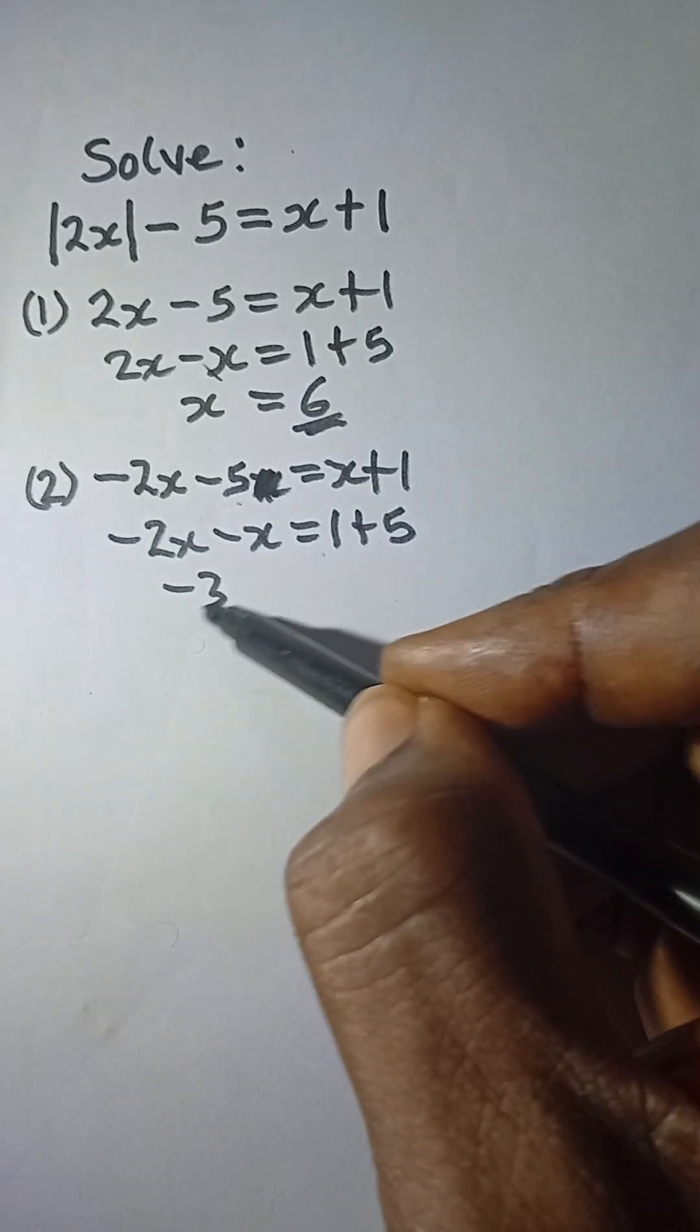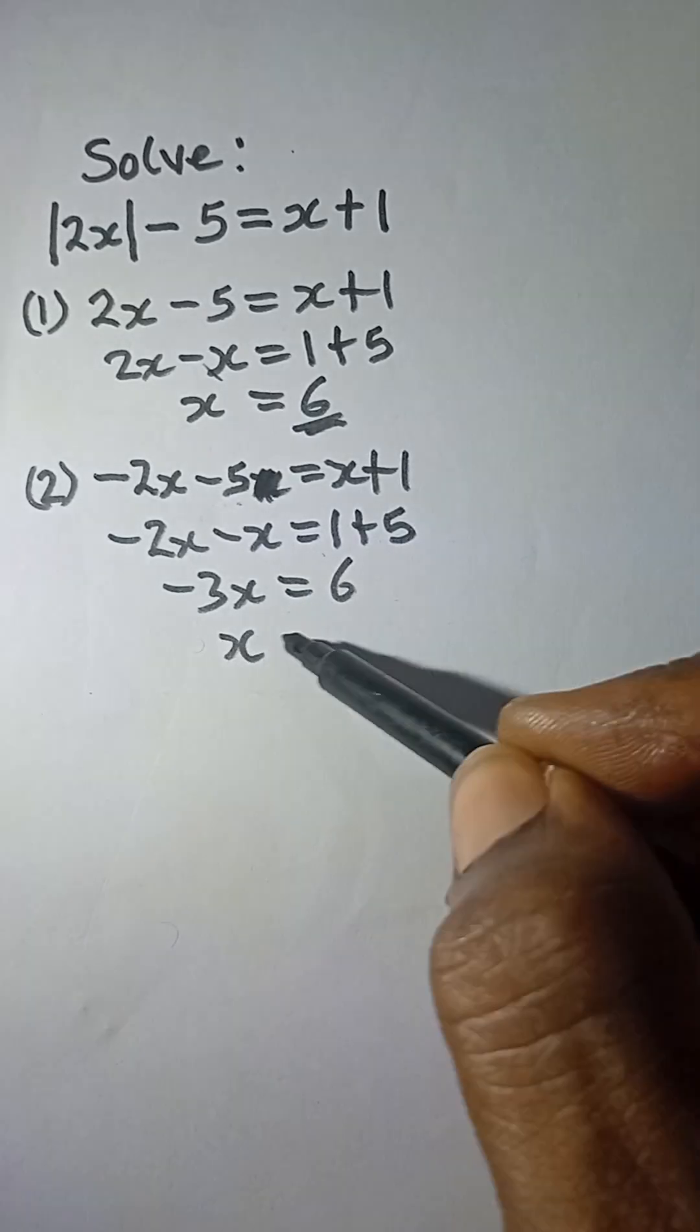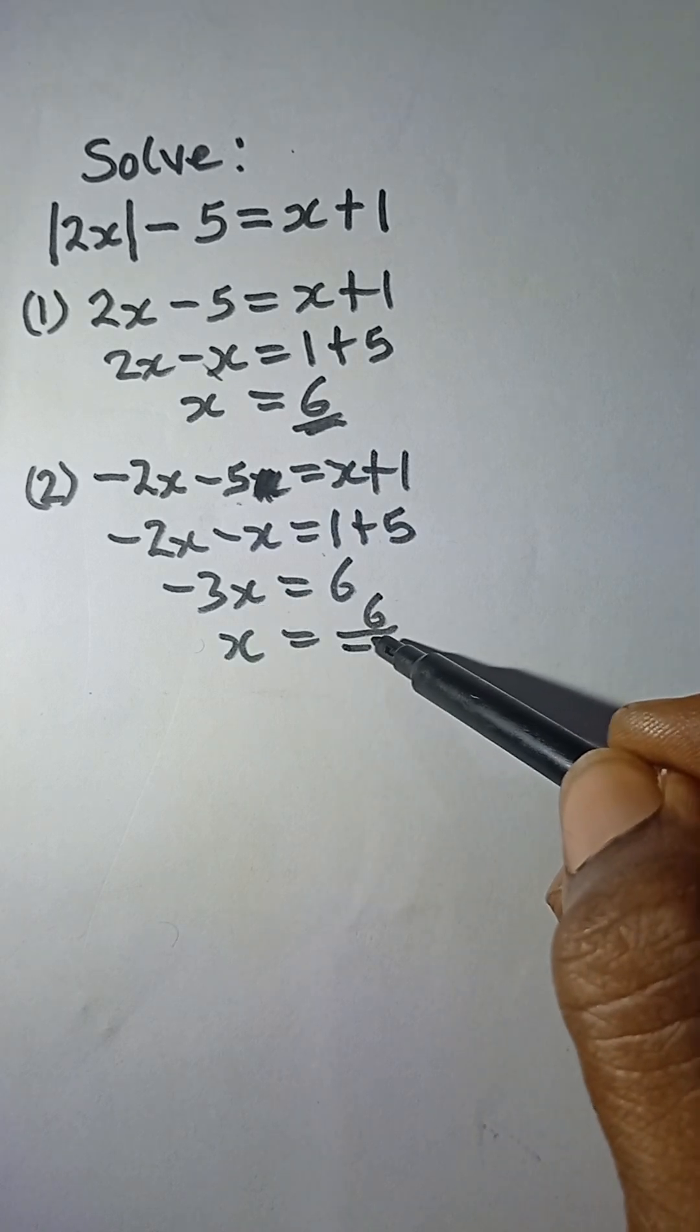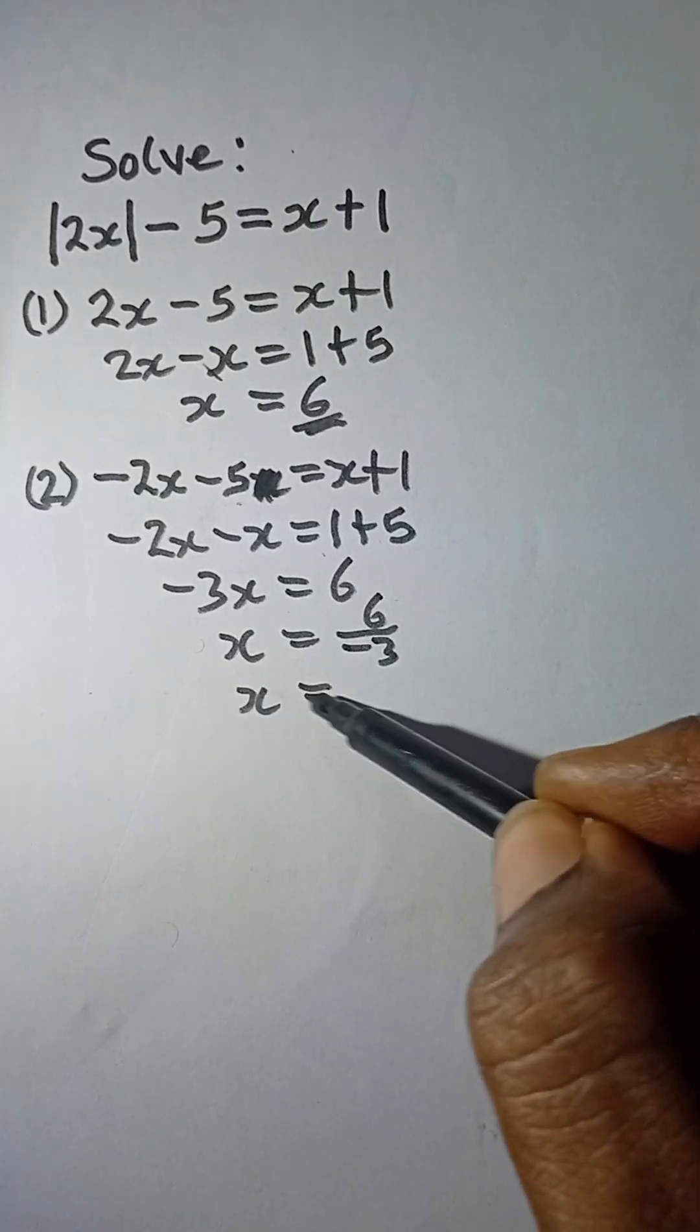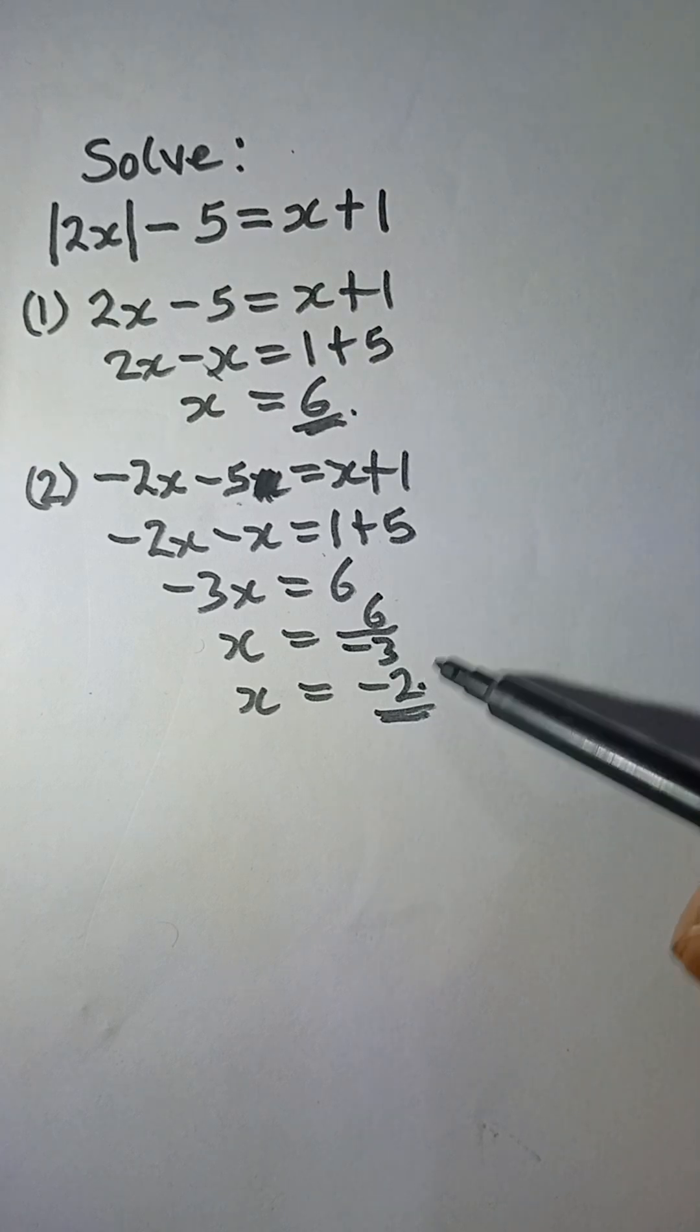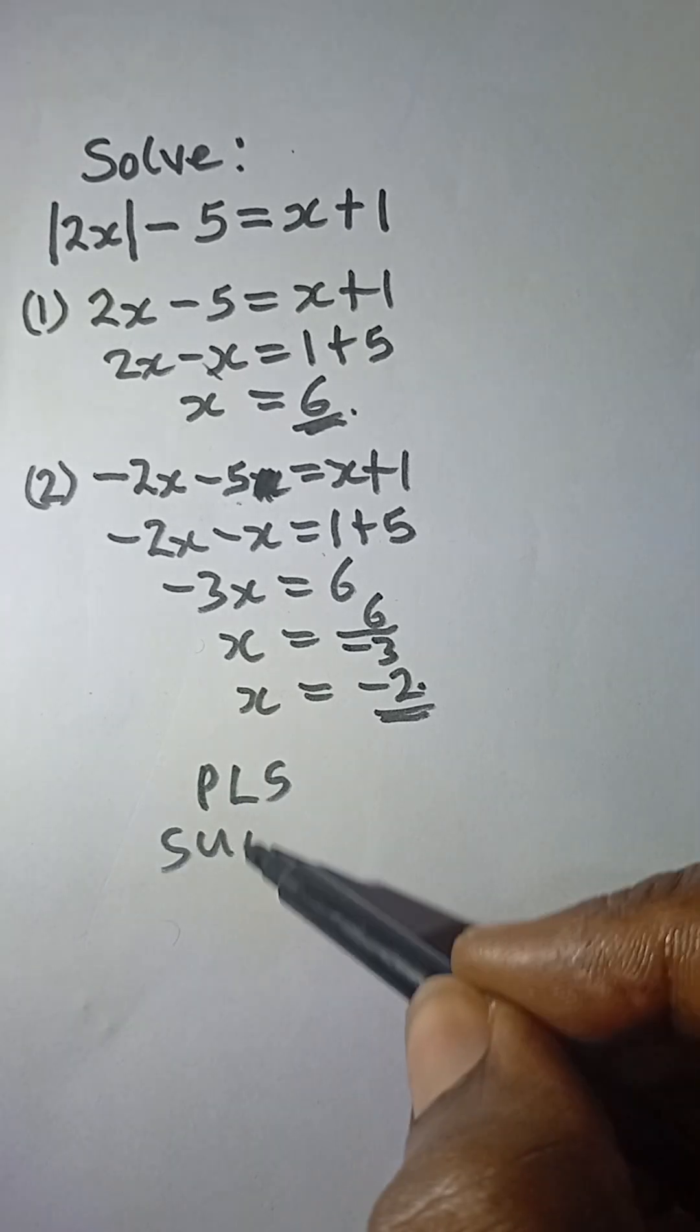And so we divide both sides by... I want to divide both sides by minus 3. 6 over negative 3, and that will give x is equal to minus 2. So these are the two possible solutions. Please subscribe to this channel